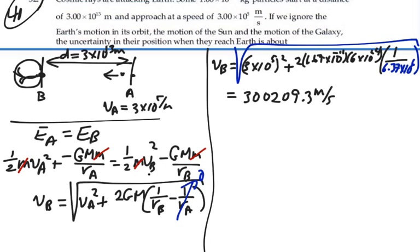All right. So our uncertainty in velocity is going to be our velocity of B minus our velocity at A, which will be 209.3 meters per second.